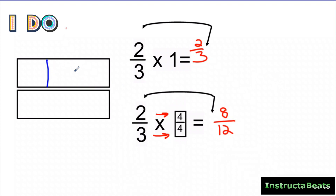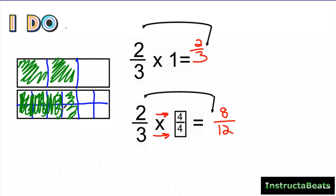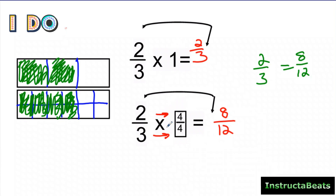I'm going to do two-thirds on this area model, then shade in 8 twelfths on another split into twelfths. Counting: 2, 4, 6, 8. Even though I wasn't exactly perfect, you can see that if I ate 8 twelfths of this brownie and you ate two-thirds of this brownie, it is the same amount. So two-thirds is equivalent to 8 twelfths. A lot of teachers just say multiply the top and bottom by the same thing, but I want to teach you why — you're multiplying by 4 fourths, which is really multiplying by 1, so the answer must be equivalent to the fraction you started with.